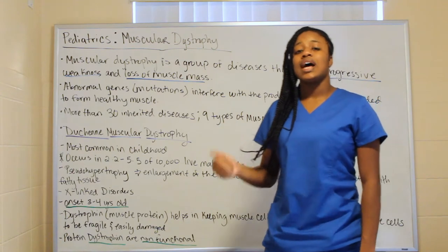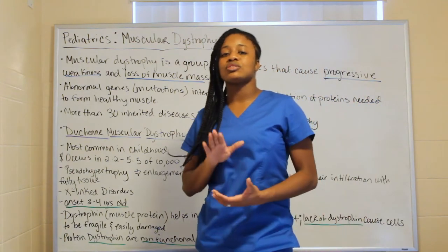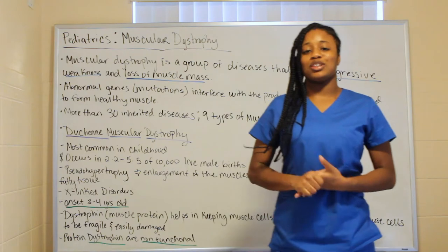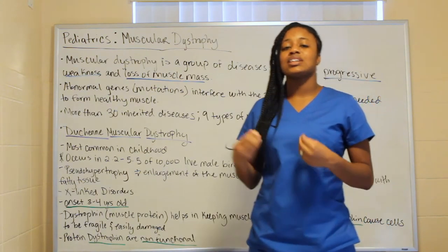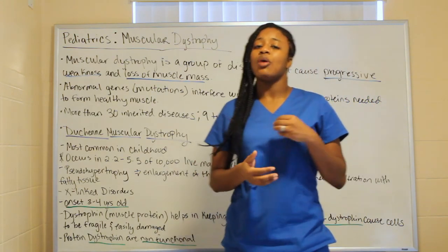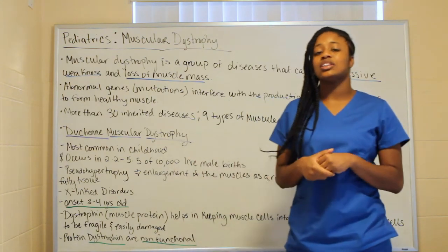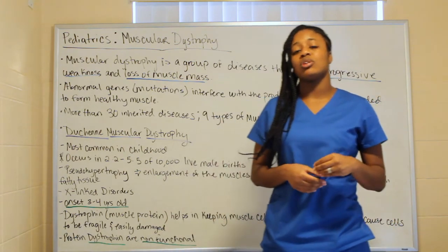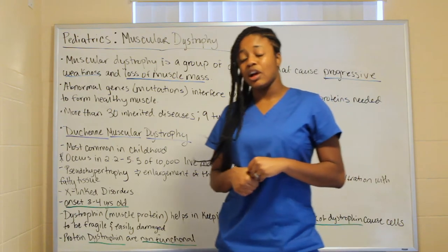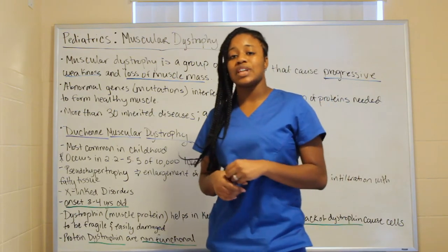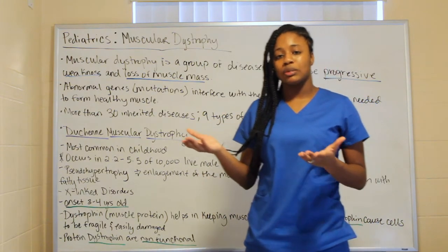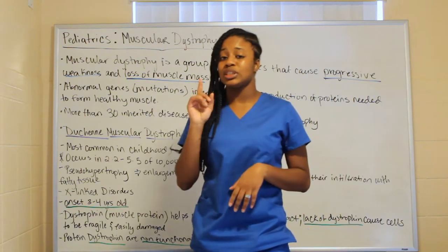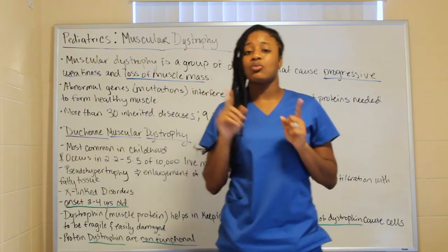Duchenne is an X-linked disorder. With X-linked disorders, think about the mother — the mother is the carrier. The male population is mainly affected because a male chromosome makeup is X and Y. When you see X and Y, you know that is a male; when you see two X's, you know it's a female.